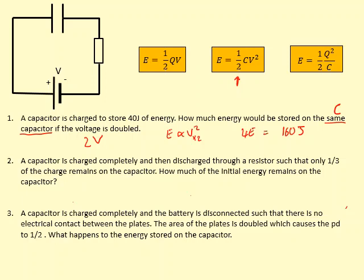In the second question, a capacitor partially discharges through a resistor such that only a third of the charge remains. How much of the initial energy remains? The capacitance is constant, so use E = ½Q²/C. Energy is directly proportional to Q², so if charge is one third, the energy becomes one ninth of the initial energy.